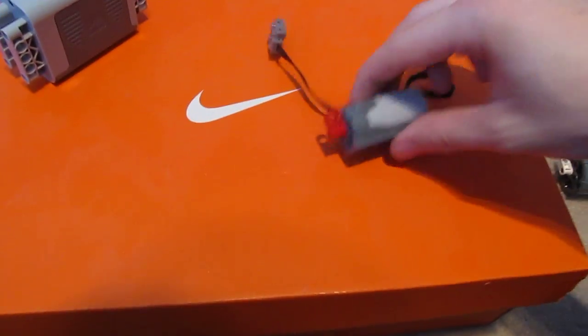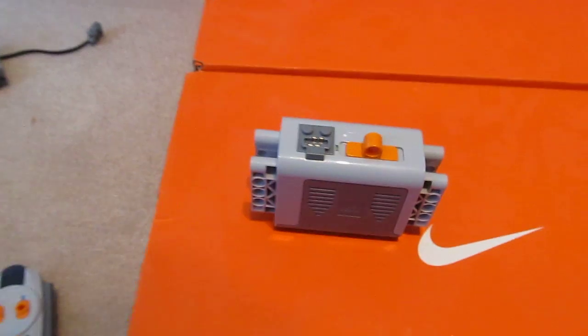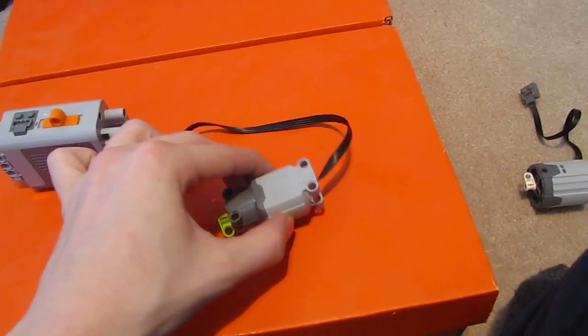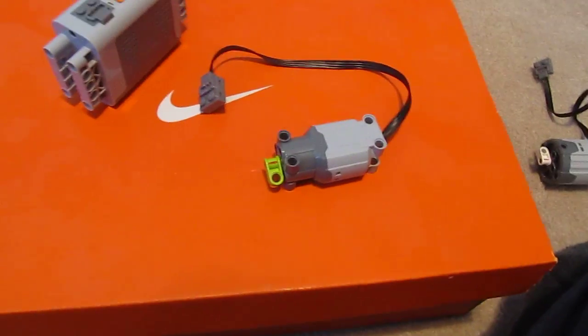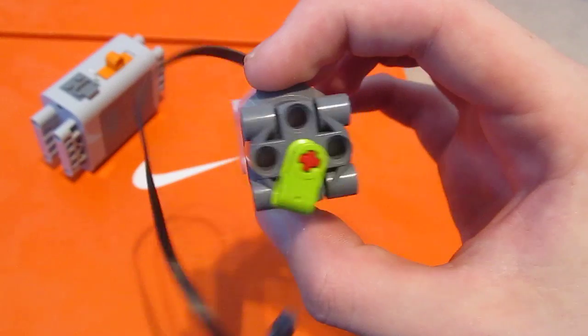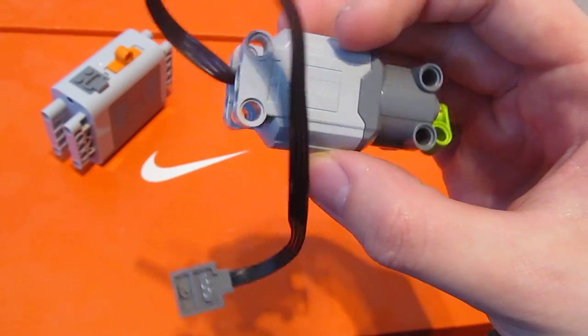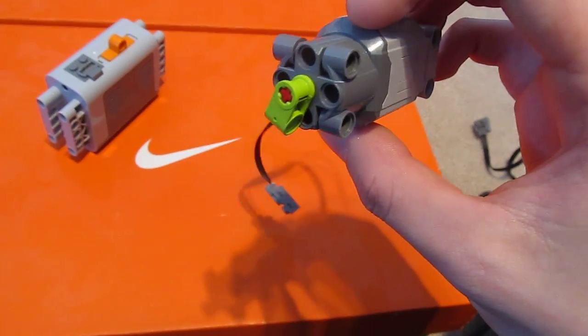Next up is the L motor. This is one of the newest motors Lego has released and it has to be one of the coolest motors in my opinion. This thing is just crazy. This motor is actually designed to be replaced, not really replaced but just work where the XL motor is too large and the M motor is too small.